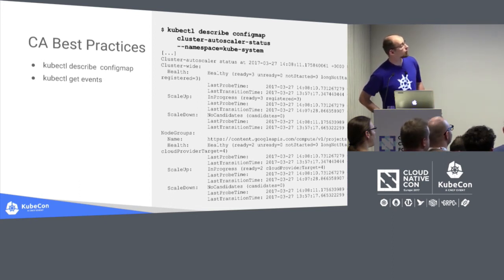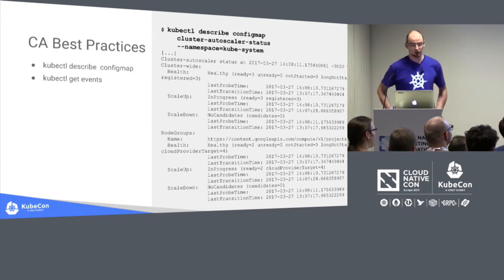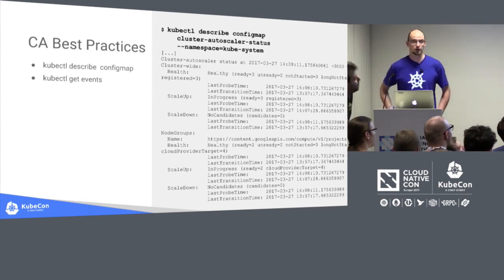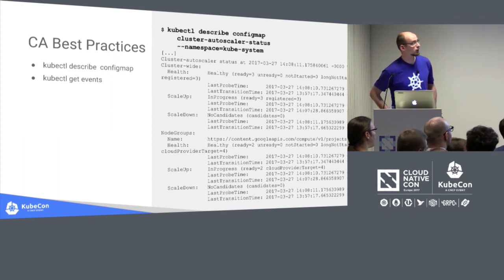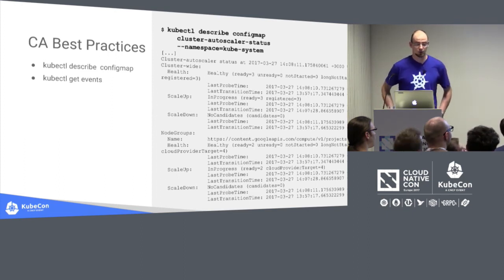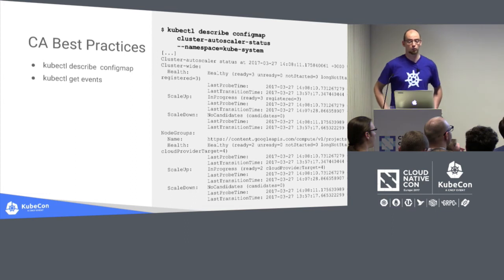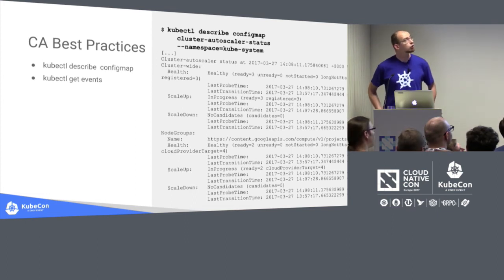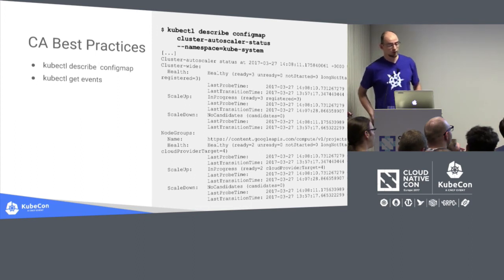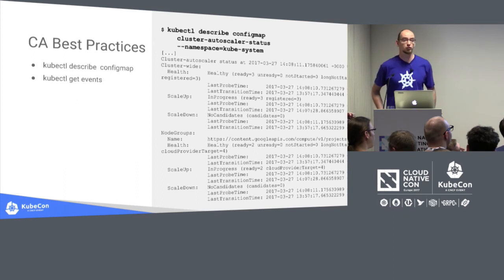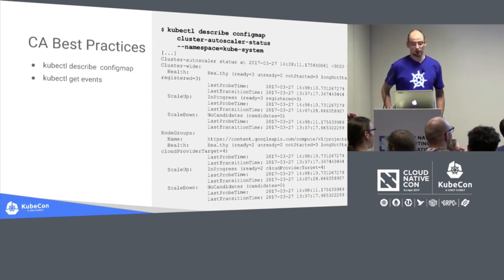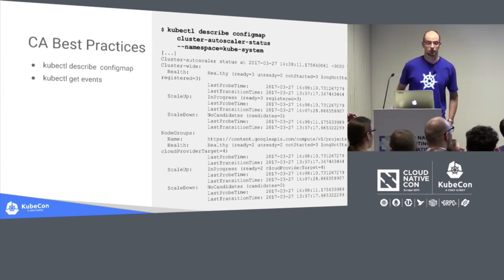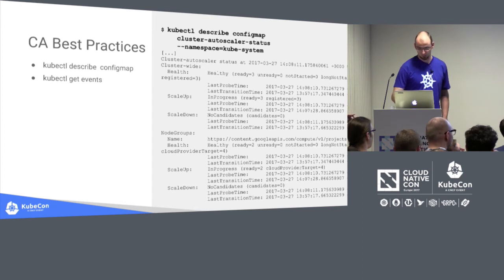In Kubernetes 1.6, two things can help you understand the status of cluster autoscaler. First, there is a ConfigMap accessible with a simple kubectl command, which contains the current state of cluster autoscaler, what actions are being taken, and whether any nodes could possibly be removed soon. Cluster autoscaler also publishes events — either to pods or nodes if directly connected, or to the ConfigMap if the event is about the overall cluster state. Check these if you feel something is wrong with your node count.